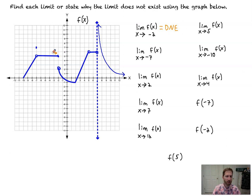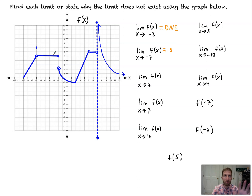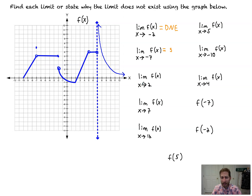On to the next one: the limit as x approaches negative 7 of f(x). As we approach from the left side and the right side, we both approach a y value of 5, so the limit is 5. It's important to note that we are not finding the function's value at negative 7; we're finding what y value we approach from both sides, and that is 5.